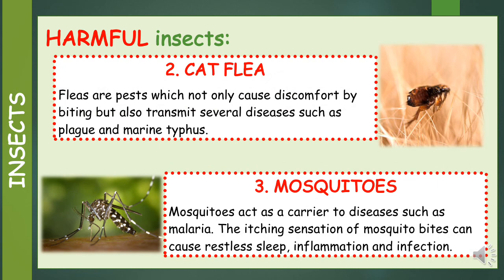Number 2: Cat flea. Fleas are pests which not only cause discomfort by biting, but also transmit several diseases such as plague and marine typhus.